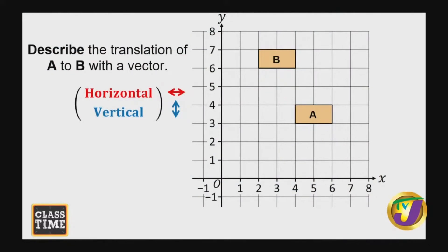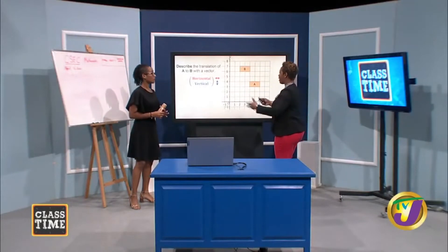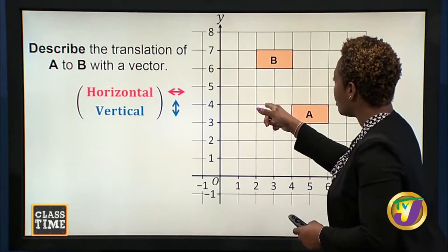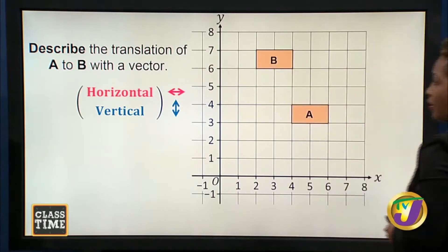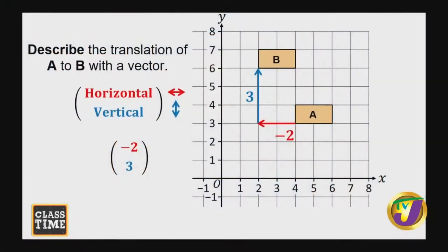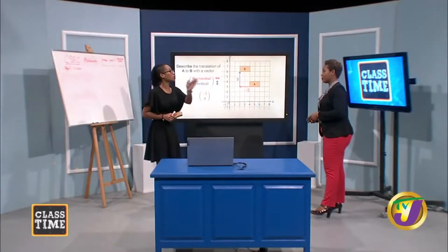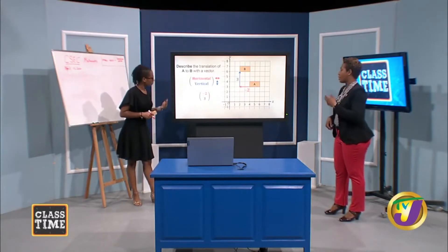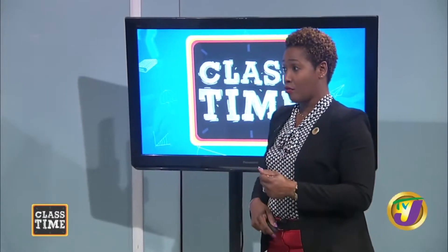Describe the translation of A to B with a vector. We have horizontal and vertical movement. Looking at a point, I count two units horizontally and three units upward — but actually it's two to the left, not right! So you have to indicate direction. A negative number tells us it's moving to the left. The sign of the values within the translation vector tells us the direction of the move.